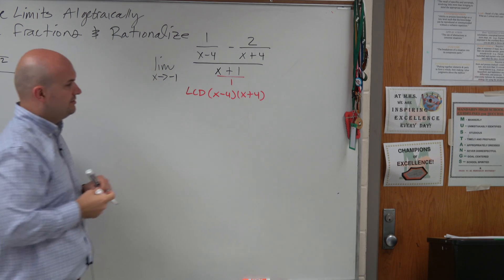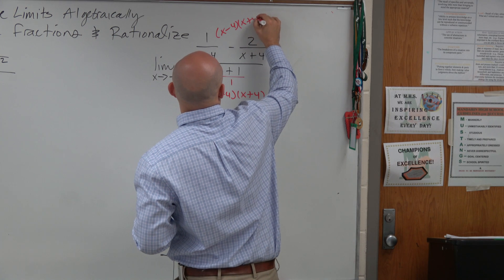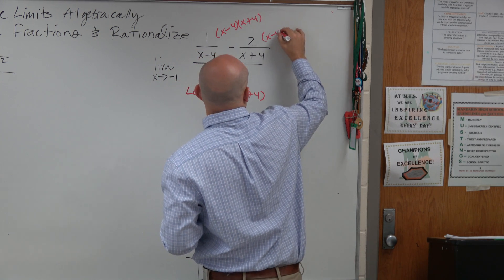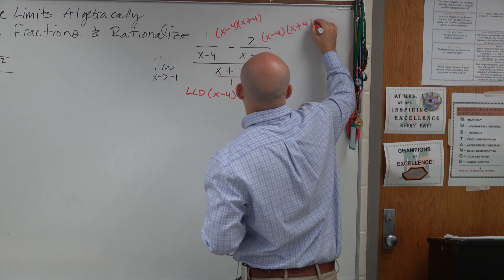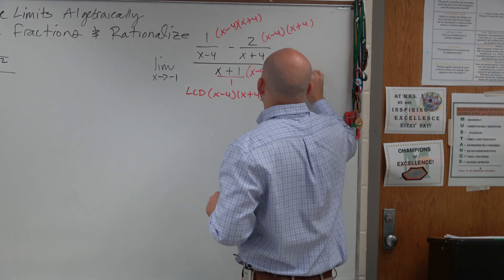One we don't really care so much about. So I'm just going to multiply everything by x minus 4 times x plus 4. Everything. OK.